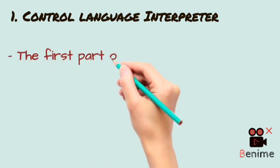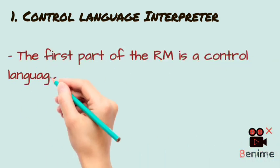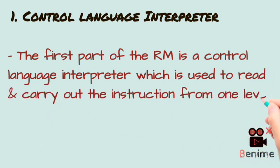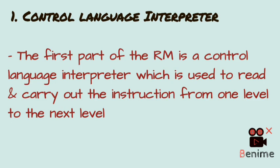The first part of resident monitors is the CLI — Control Language Interpreter. The basic work of the CLI is to read the instructions and then carry those instructions from one level to another level for execution. So the basic work of the first part is to read and carry out instructions.